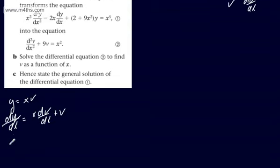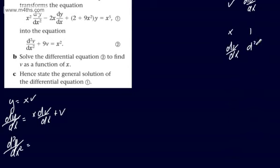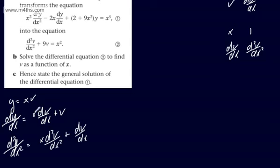We now want the second derivative d²y/dx². Differentiating dy/dx = x dv/dx + v again requires the product rule on the first term. Differentiating x·(dv/dx) gives x d²v/dx² + dv/dx, and differentiating v gives another dv/dx. So d²y/dx² = x d²v/dx² + 2 dv/dx.